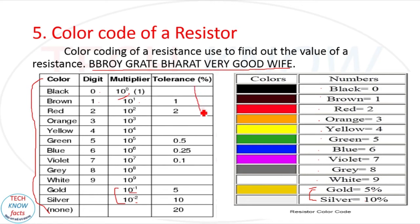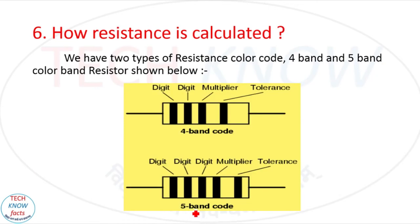The tolerance values for each color band are: brown = 1%, red = 2%, green = 0.5%, blue = 0.25%, violet = 0.1%, gold = 5%, silver = 10%. If there is no color band, the tolerance is 20%.